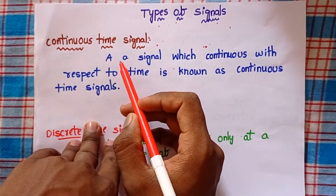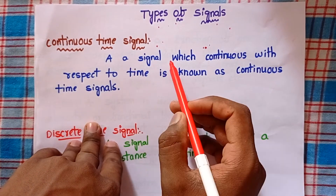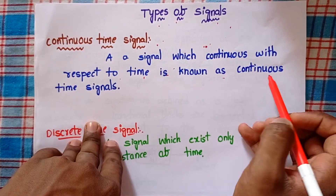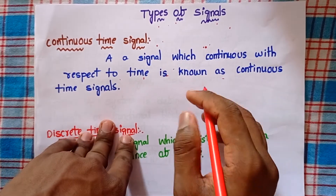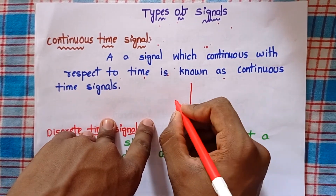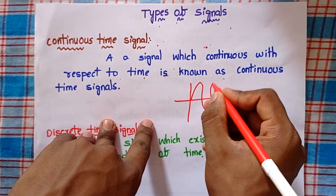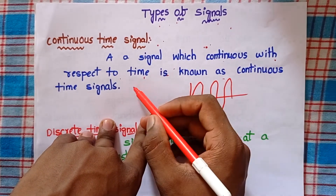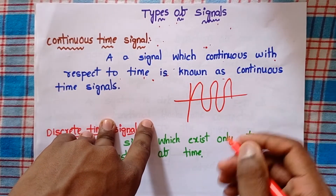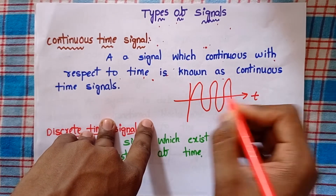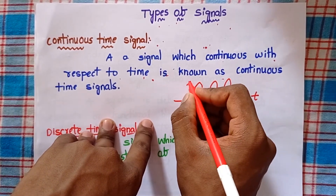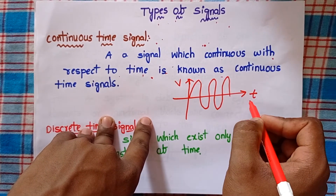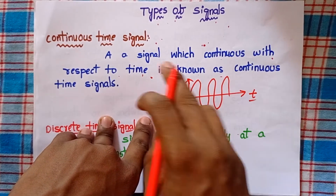First let's see the definition of continuous time signal. A signal which continues with respect to time is known as a continuous time signal. Consider this is the time axis T and this is the magnitude axis, suppose V. If this signal is continuous with respect to time, then that signal is known as continuous time signal.